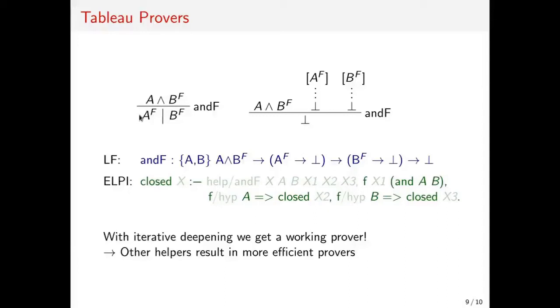It turns out that we can just rewrite it like this, and from this we can directly translate it into LF. That's pretty straightforward. So if we have A and B marked as false and we can close a branch with A marked as false and we can close a branch with B marked as false, then we can close everything.